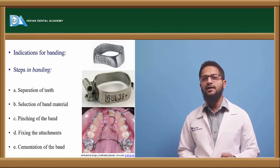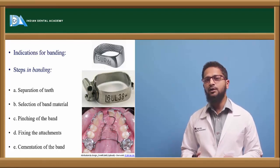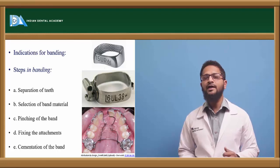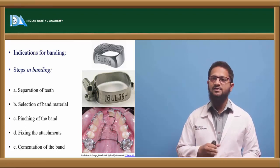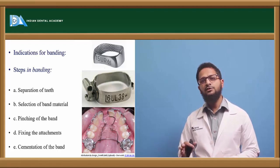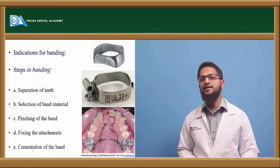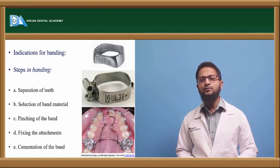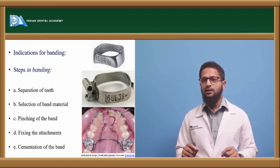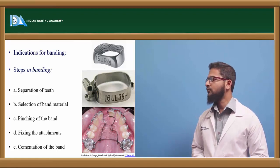Banding is also done in areas with frequent bracket breakages. Apart from this, whenever attachments are needed on both the buccal and lingual sides — which is not possible with bonding — banding is preferred. Banding is also done when using external appliances like headgear; in such cases, banding of the posteriors is done and buccal tubes are placed on the band material for the headgear or other external appliances.